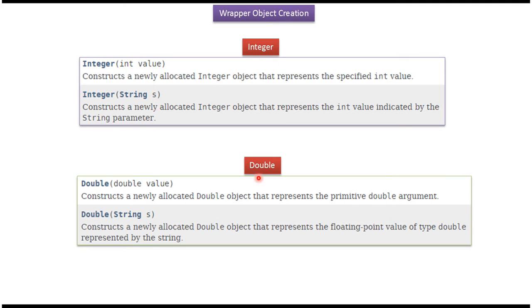Double is also a wrapper class. Using these two constructors we can create a Double object. One constructor accepts primitive data type double and another constructor accepts string.